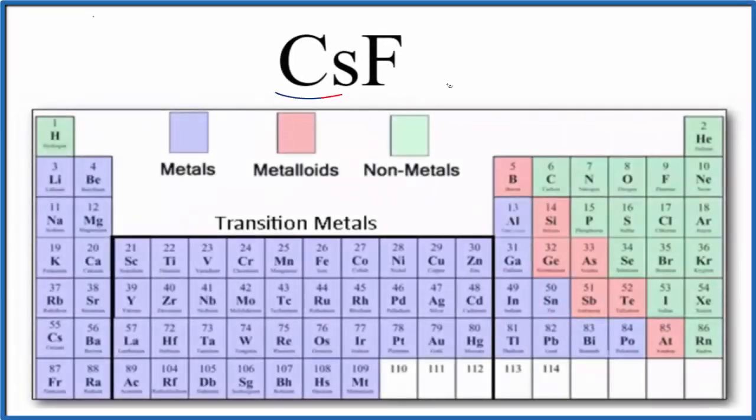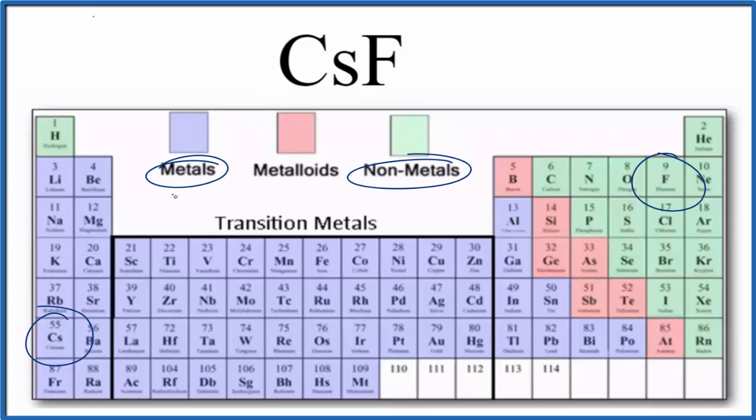The question is whether CsF, this is cesium fluoride, is ionic or covalent. If we look at the periodic table, we find cesium right here - that's a metal - and fluorine over here - that's a nonmetal. When we have a metal and a nonmetal, we're thinking that this will be an ionic compound. Let's take a look at the difference in electronegativity just to check.